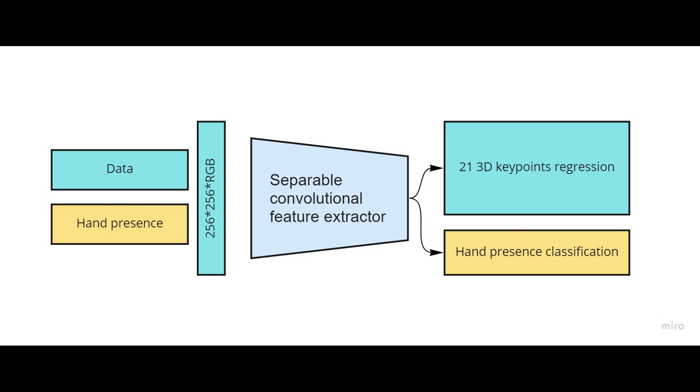Also, let's take a look at this diagram where the algorithm for hand keypoint estimation is drawn. We not only estimate all the key points on a single image — we also detect hand presence on that image. If you want to know more about the algorithm, go to my article on Medium where I explain it a little bit more.